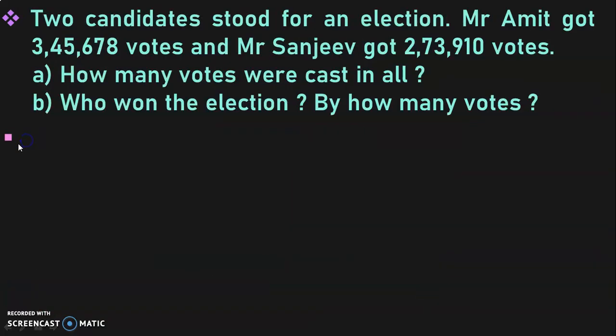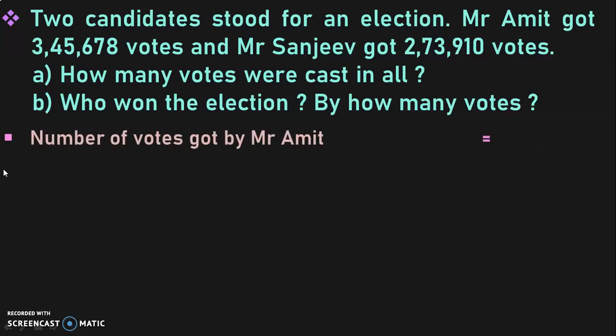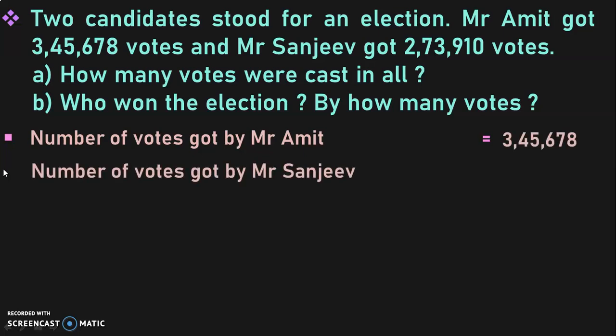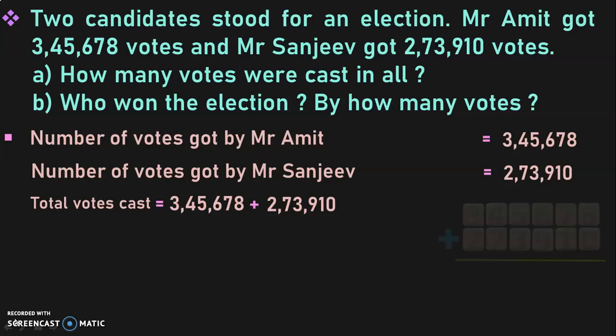Next sum: two candidates stood for an election. Mr. Amit got 3,45,678 votes and Mr. Sanjeev got 2,73,910 votes. How many votes were cast in all? Who won the election? By how many votes? Write down the statements: votes for Mr. Amit = 3,45,678; votes for Mr. Sanjeev = 2,73,910. Total votes cast equals the sum of these two six-digit numbers.